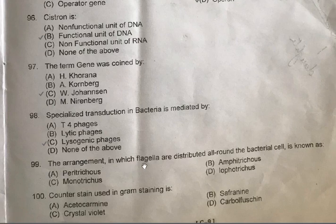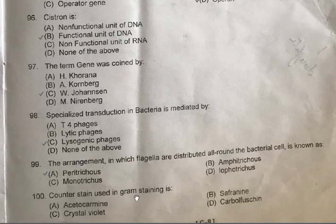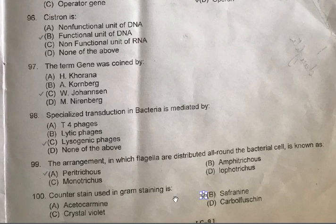Question 99: The arrangement in which flagella are distributed all around the bacterial cell is known as — A: Peritrichous, B: Amphitrichous, C: Monotrichous, D: Lophotrichous. The correct option is A, Peritrichous. Question 100: Counter stain used in gram staining is — A: Acetocarmine, B: Safranin, C: Crystal violet, D: Carbol fuchsin. The correct one is B, Safranin. If counter stain is taken by the cell, the bacterial cell appears pink — gram negative. If the counter stain is not taken, the cell appears purple in color — gram positive.